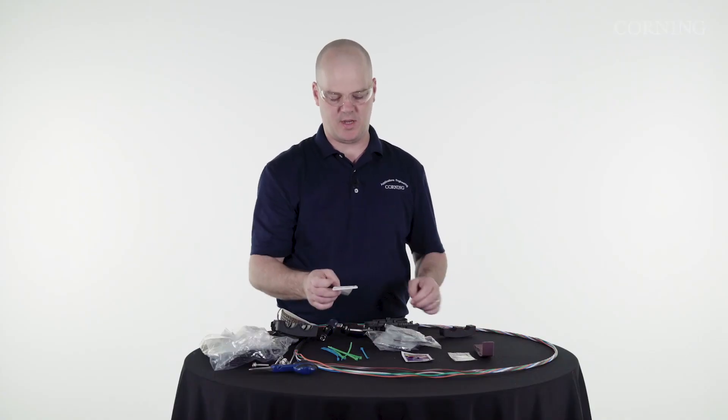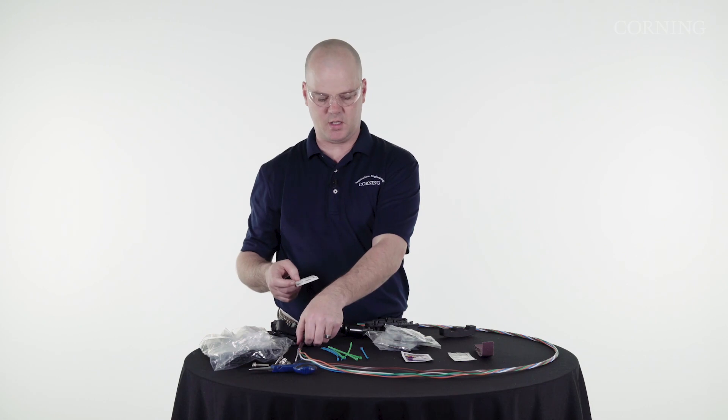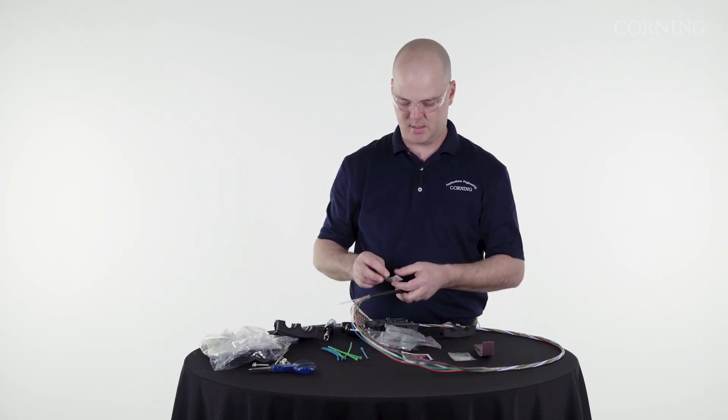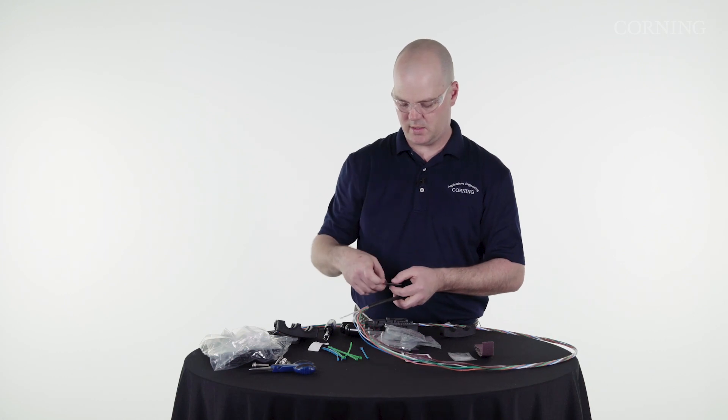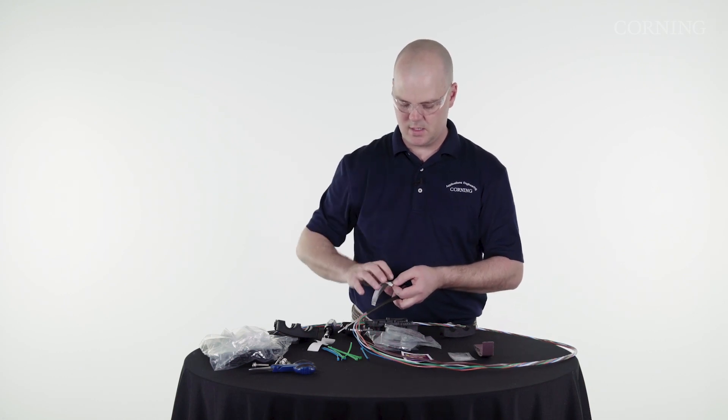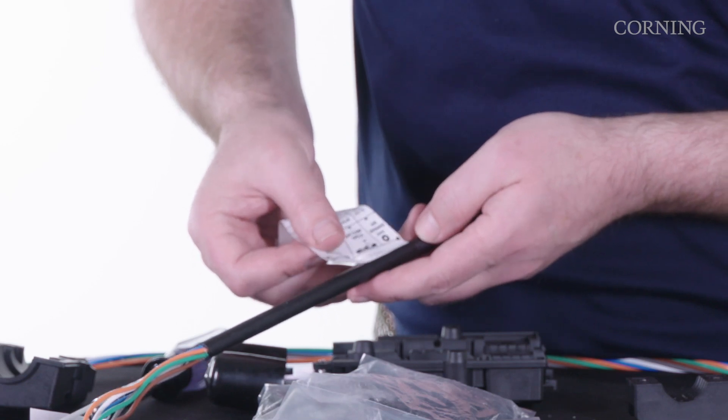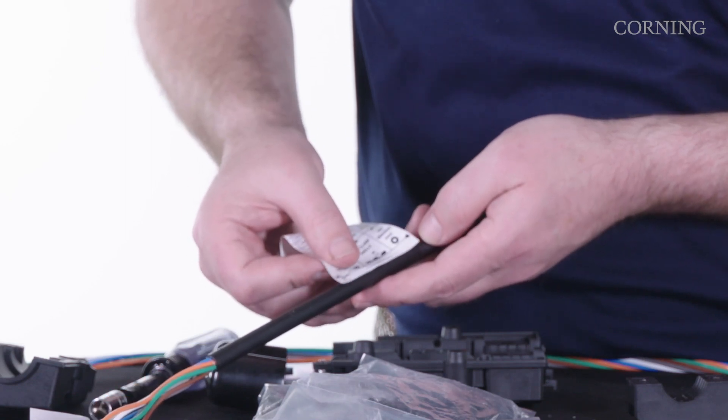The next step we're going to do is measure the diameter of the cable to figure out which of the components we're going to use. So you take the back of this sticky, peel it off, get it lined up pretty even with the radius of the center of the cable there.